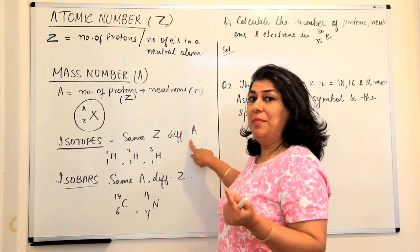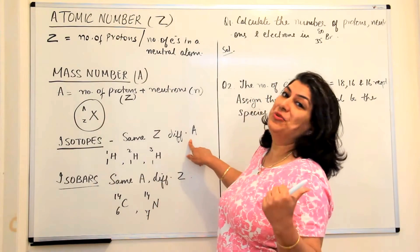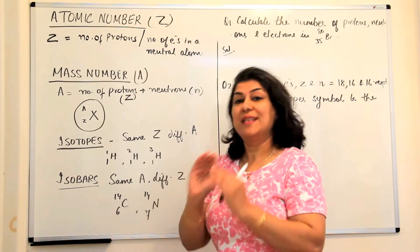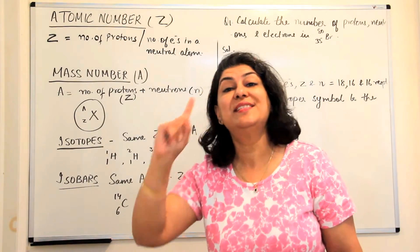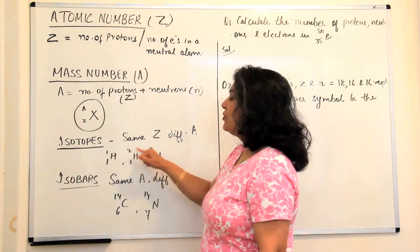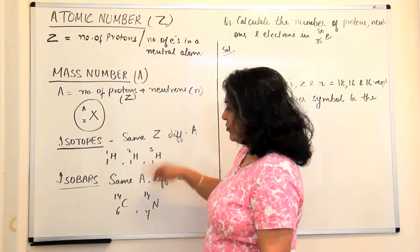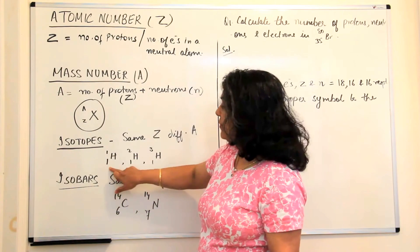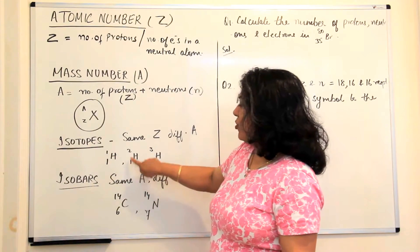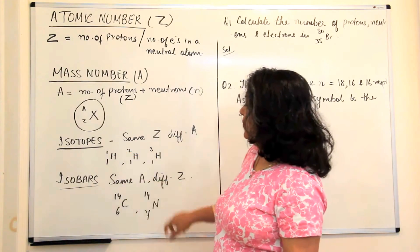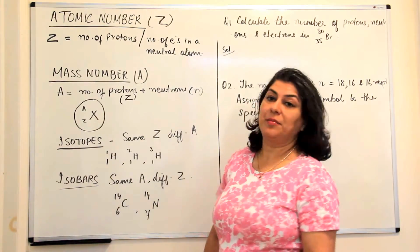Mass number is the sum of the atomic number and the neutrons. In other words, isotopes are atoms of the same element which have the same number of protons but a different number of neutrons, and that is why they have different mass numbers. For example, we have three isotopes of hydrogen: ¹H¹ has one proton and no neutrons; the second has one proton and one neutron, so mass number is two; the third has one proton and two neutrons, so mass number is three.